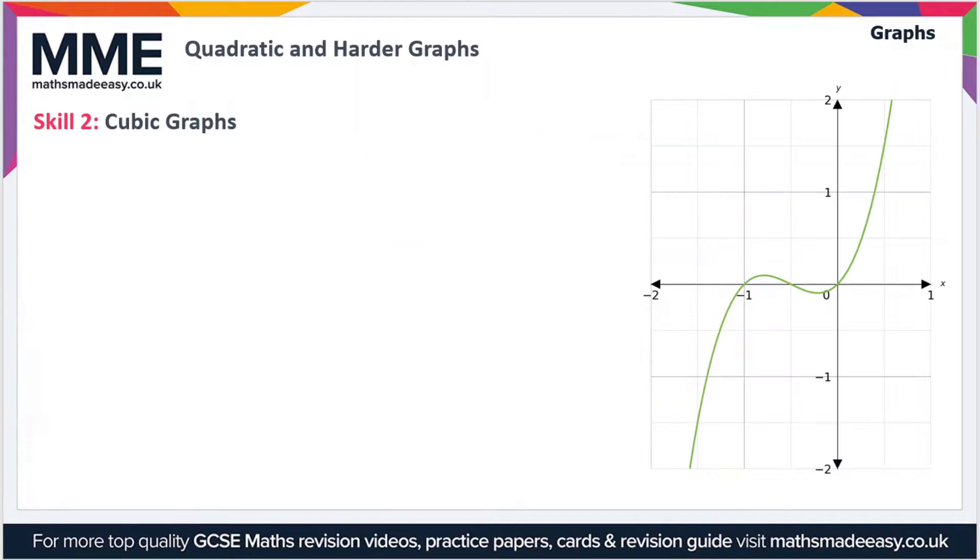For now, let's move on to cubic graphs. Cubic graphs have the general form ax³ + bx² + cx + d. As you can see, there's a term in x³ now, as well as a term in x², x, and just a number on the end, which is actually a term in x to the power zero, which is obviously just one.